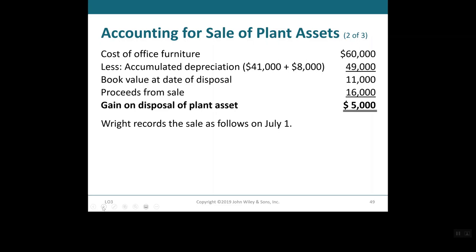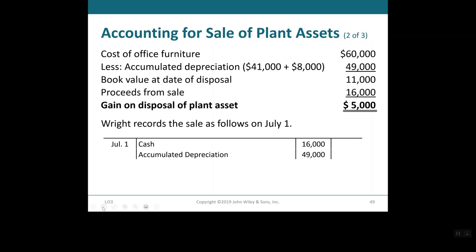The book value at the date of disposal is $11,000. The proceeds from the sale were $16,000. We said that if the proceeds from the sale or disposal exceed the book value, a gain is made. In this case, our proceeds are more than the book value, so we have a gain on disposal of $5,000. To record it: debit Cash $16,000, debit Accumulated Depreciation $49,000, credit Equipment $60,000, and credit Gain on Disposal $5,000 — and this balances the debit and credit sides.